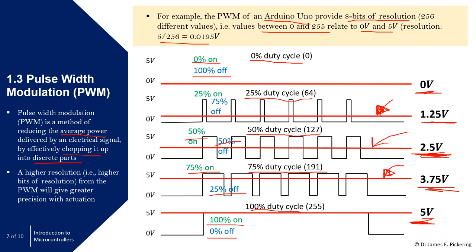Pulse width modulation is a very efficient method of supplying a desired voltage to a motor to change its revolutions per second and speed. A higher resolution — say 10-bit instead of 8-bit — gives greater precision with actuation. For high precision applications, you might want a different board with higher resolution for pulse width modulation.